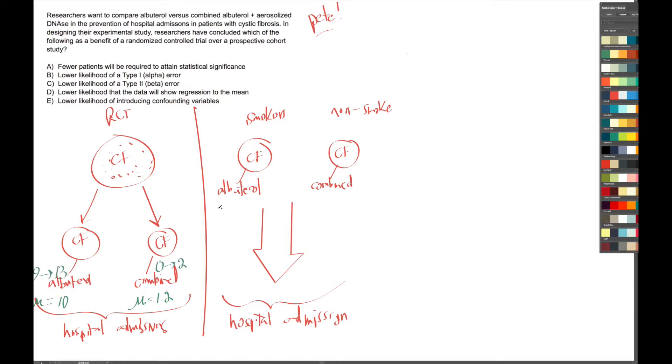Now let's think about this group. Let's just say the same thing. When we studied this group, we saw that the mean number of hospital admissions was 10, and in this group, the mean number of hospital admissions was 1.2. Now here's the thing, guys. We're going to run the same sort of statistics on a prospective cohort study as we would on a randomized controlled trial.